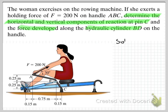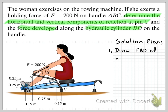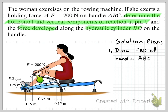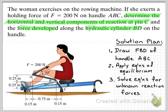Let's consider what our solution approach will be. As with most engineering mechanics problems, the first thing to do is to draw a free body diagram. We need to determine what we're going to draw it of. In this case, because we want to know the force the cylinder exerts on handle ABC and the reaction force at C, we draw the free body diagram of handle ABC. Once we've done that, the next step is to apply our equations of equilibrium and then solve for the unknown reaction forces.